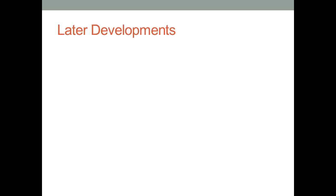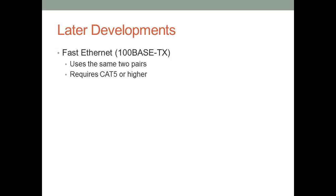100BaseTX, or Fast Ethernet, uses the same two pairs as regular Ethernet. However, because of the higher frequency, regular Ethernet typically uses Cat3 while Fast Ethernet requires Cat5 or higher.